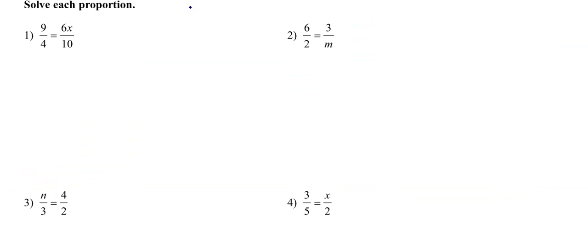So like number 1 here, let's just do the cross multiplication. So I want to take this 9 and 10, and I want to multiply them together. I have 9 times 10, which is 90. We're going to take this 4 and this 6, and we're going to multiply them together, which I want to get 24x.